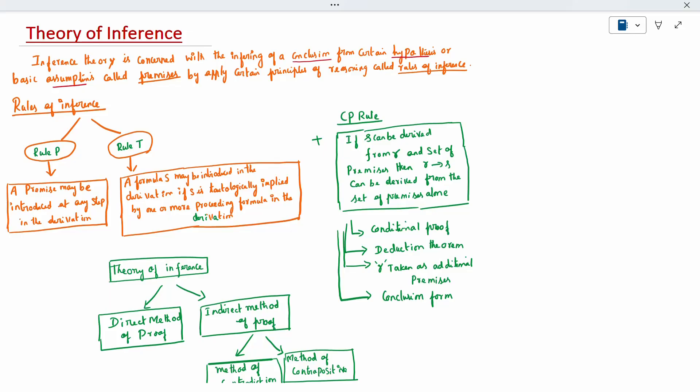The T rule means a formula can be introduced in the derivation if it is tautologically implied by one or more preceding formulas in the derivation. If one or more formulas are involved, then we can introduce the T rule. Only these two rules are used, and additionally the CP rule.